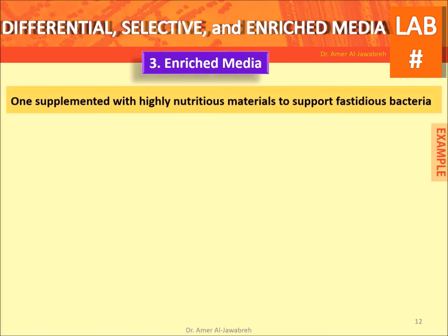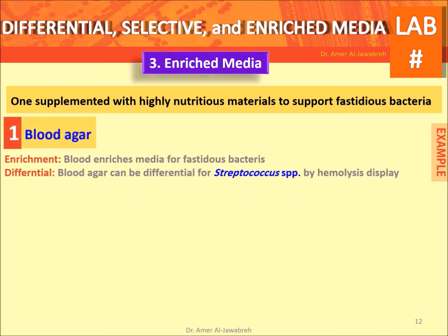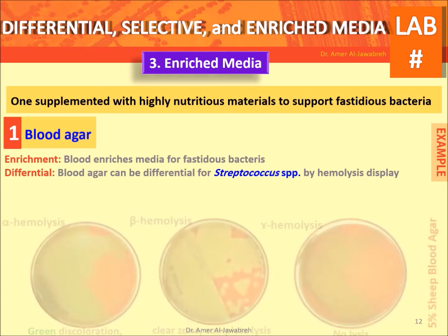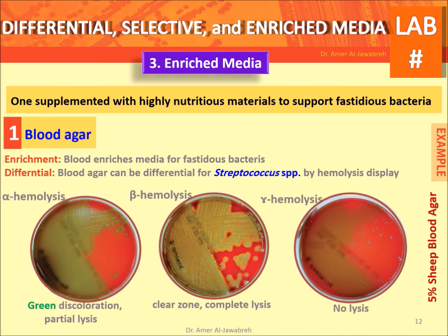Enriched media: supplemented with highly nutritious materials to support fastidious bacteria. Blood agar: enrichment by blood, differential by hemolysis display. Alpha hemolysis: partial lysis, green discoloration. Beta hemolysis: complete lysis, clear zone. Gamma hemolysis: no lysis.